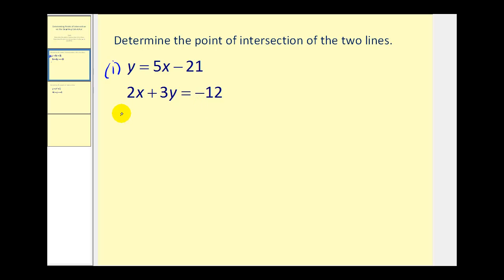Let's go ahead and subtract 2x on both sides. So we'd have 3y equals negative 2x minus 12. We'll divide everything by 3. So our second linear equation solved for y is going to be y equals negative 2/3x minus 4.